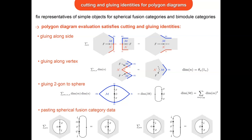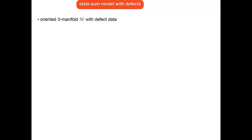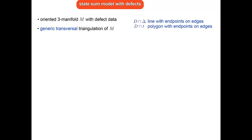This is the foundation for generalized 6j symbols and how one defines the state sum with defects. One takes an oriented three-manifold with defect data and a triangulation that interacts nicely with the defects — it must be transversal and generic. Transversal means defect surfaces intersect triangles in a line with endpoints on the sides, and intersect tetrahedra in a polygon with endpoints on edges. Generic means no vertices of the triangulation sit on a defect surface, no edges intersect a defect line, and no defect vertices are inside triangles of the triangulation.